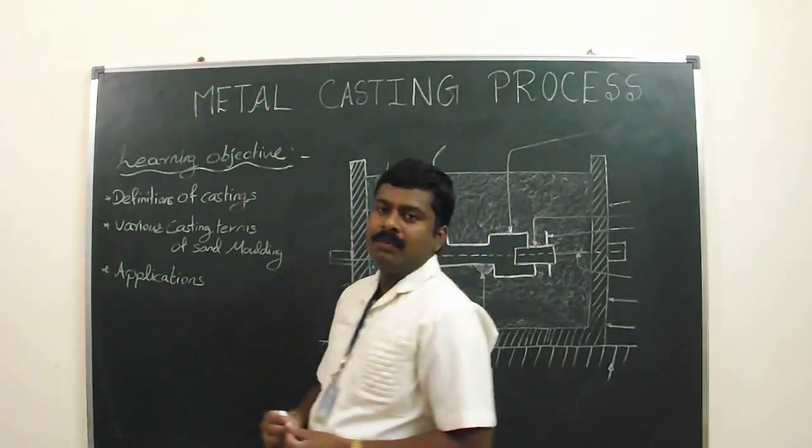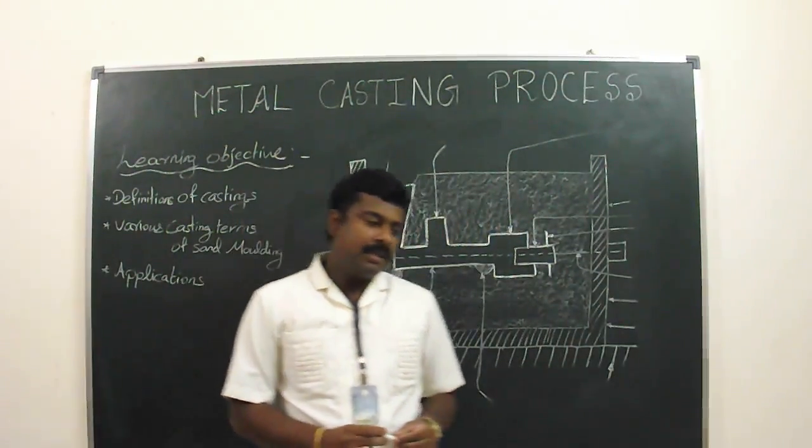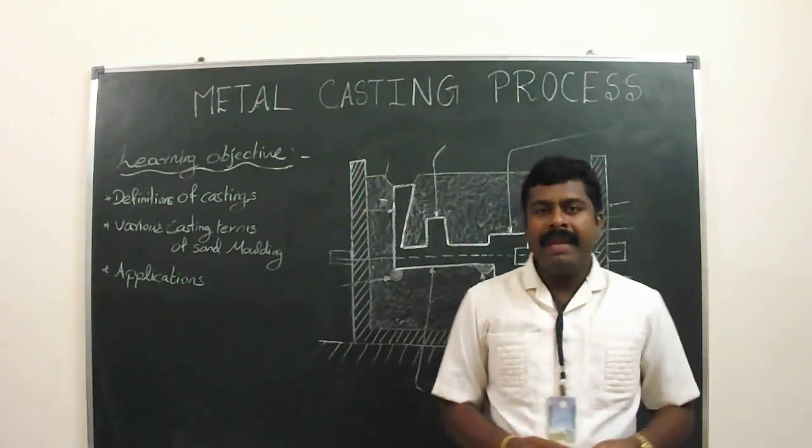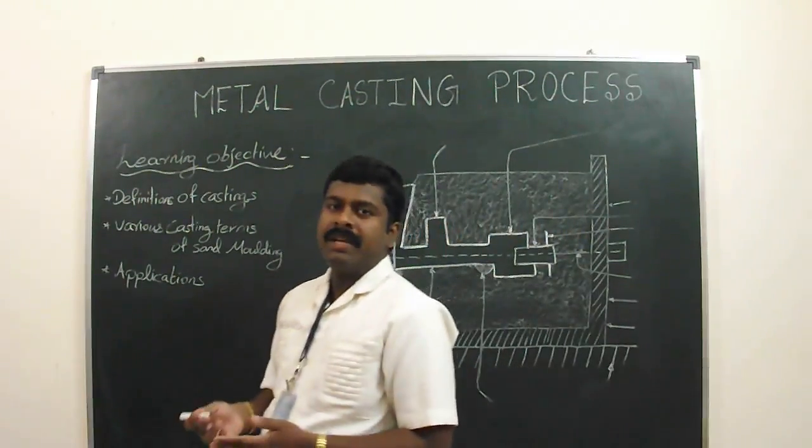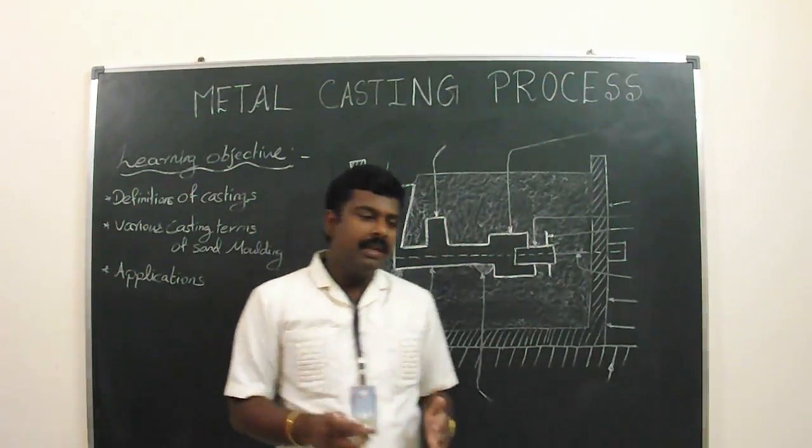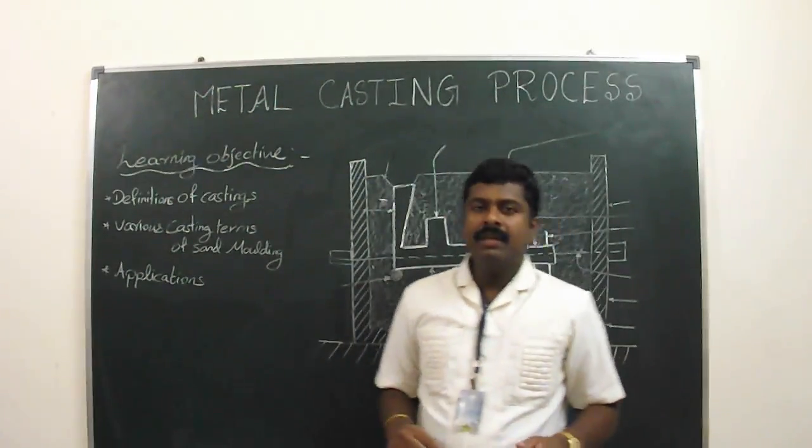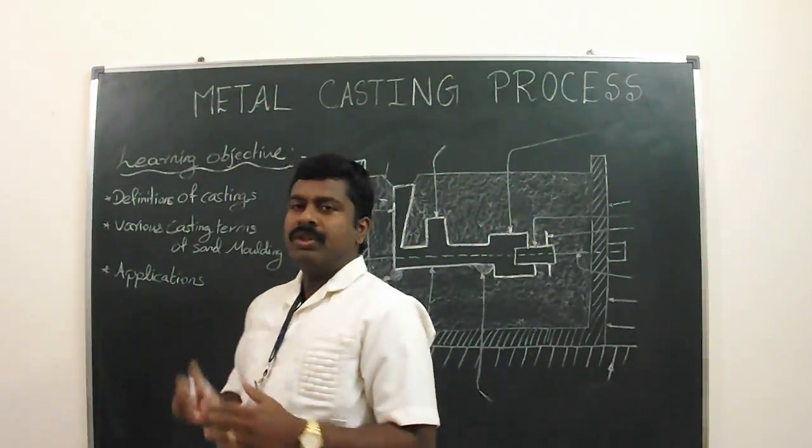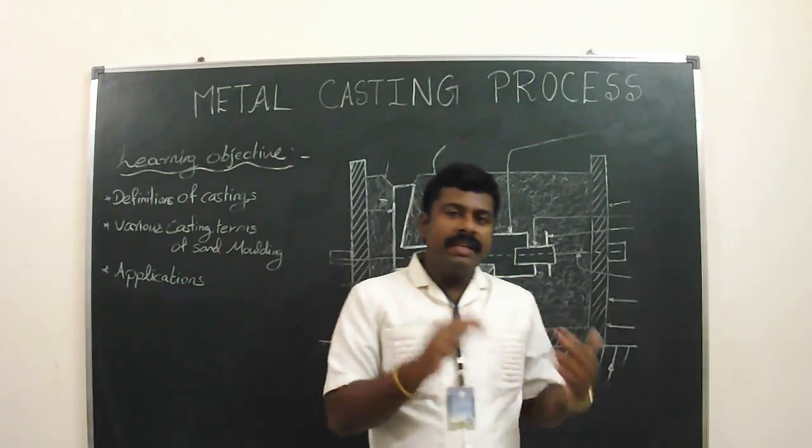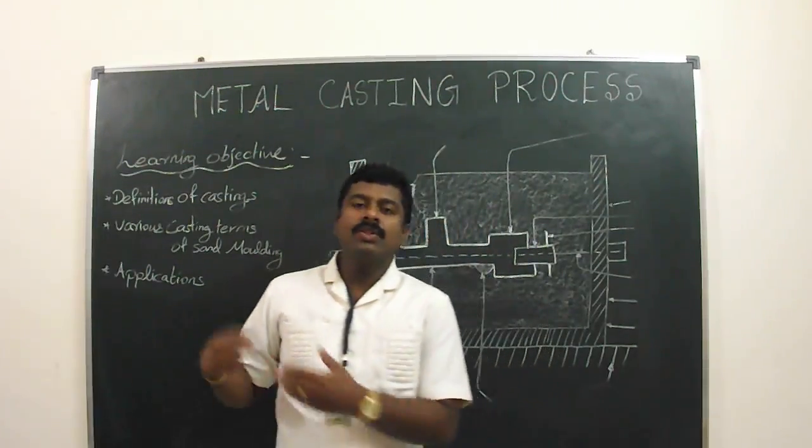Metal casting process is the most ancient manufacturing process that is used to make complex parts by using liquid metals. It means melting the metal and pouring it into the refractory mold cavity by desired shapes and allowing it to solidify.